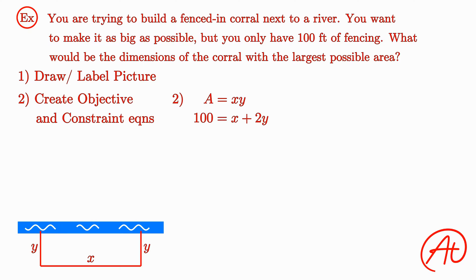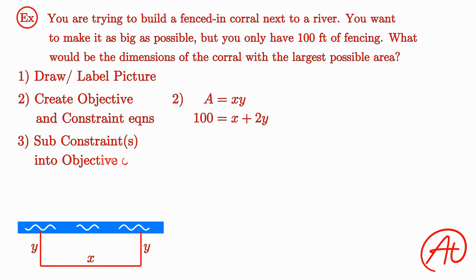Now that we've generated our objective and constraint equations, we can begin trying to solve the problem. Remember, our goal is to maximize area. If you recall from our video on maximizing and minimizing functions, all we have to do is take the derivative of that function, set it equal to zero, and solve. However, our area function has x's and y's in it, and we don't know how to take derivatives of functions with multiple variables yet. This is where the constraint equation comes into play. Using the constraint equation, we can solve for one variable and use that to get rid of one of the variables in the objective function. Let's isolate x in the constraint equation. We can subtract 2y from both sides to get that x equals 100 minus 2y.